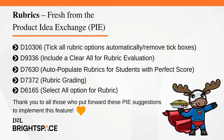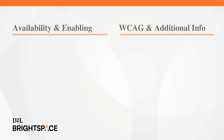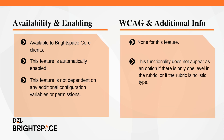The Rubrics feature implements the following PI items: D10306, tick all rubric options automatically or remove tick boxes; D9336, include a clear all for rubric evaluation; D7630, auto-populate rubrics for students with perfect score; D7372, rubric grading; and D6165, select all option for rubric. Thank you to all those who put forward these PI suggestions. The Rubrics feature is available to Brightspace Core clients and is automatically enabled. It is not dependent on any new or additional configuration variables or permissions. Note that this functionality does not appear as an option if the rubric has only a single level, or if the rubric is of the holistic type.